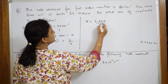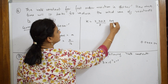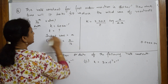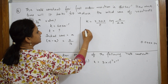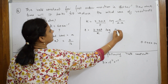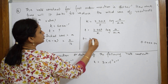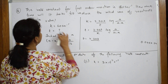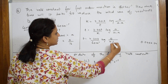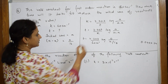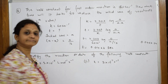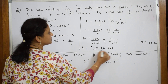Now substitute into the first order equation: k is equal to 2.303 by t, log a by (a minus x). I need to find t, so t is equal to 2.303 by k, log a by (a minus x). So t equals 2.303 divided by 60, log a by (a/16). When I solve this I get an answer of 0.0462 seconds.